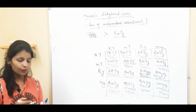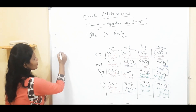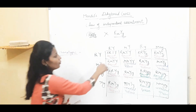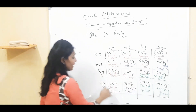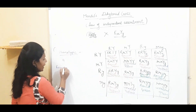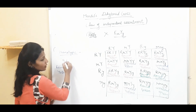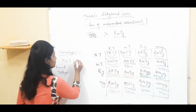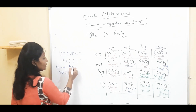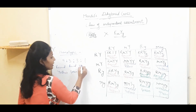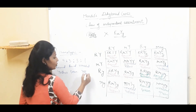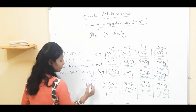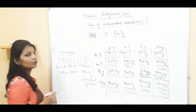Now let's do phenotypic ratio. Looking at phenotype: we have 9 round and yellow, 3 round and green, 3 wrinkled and yellow, and 1 wrinkled and green. So the phenotypic ratio is 9:3:3:1.